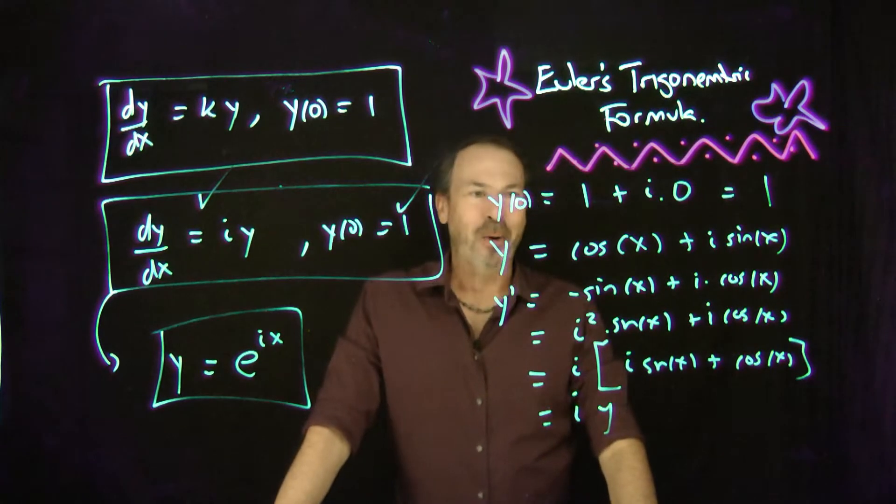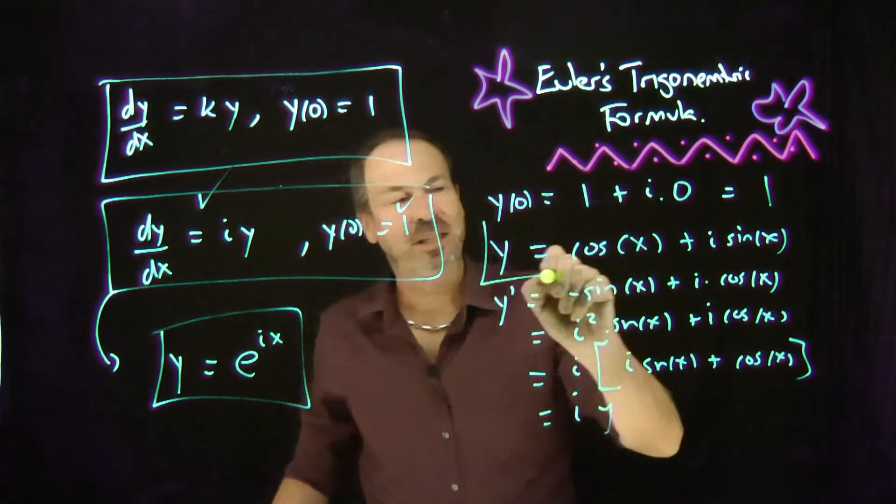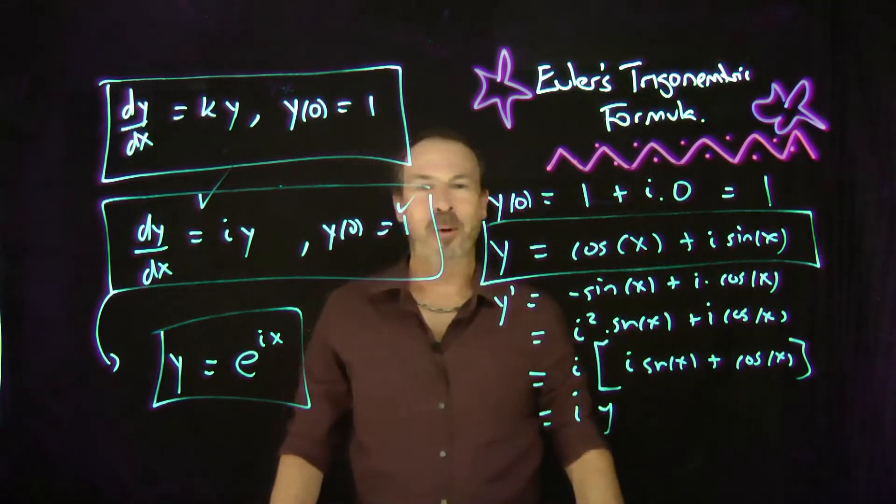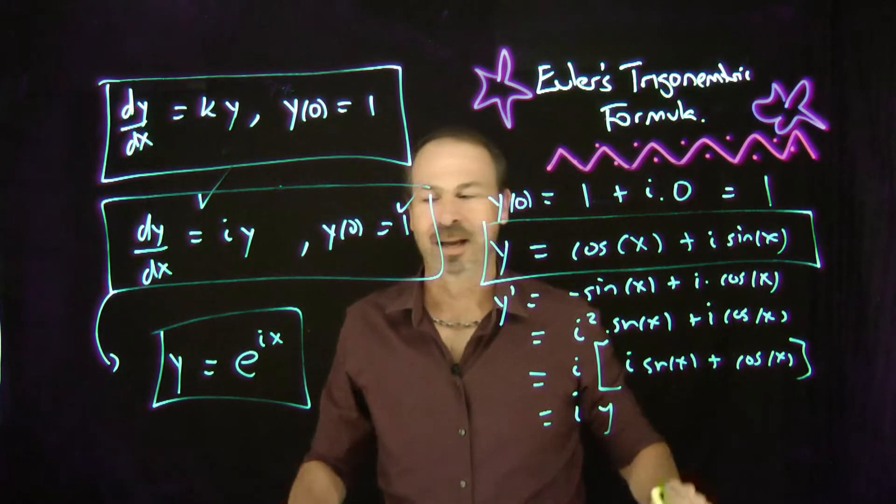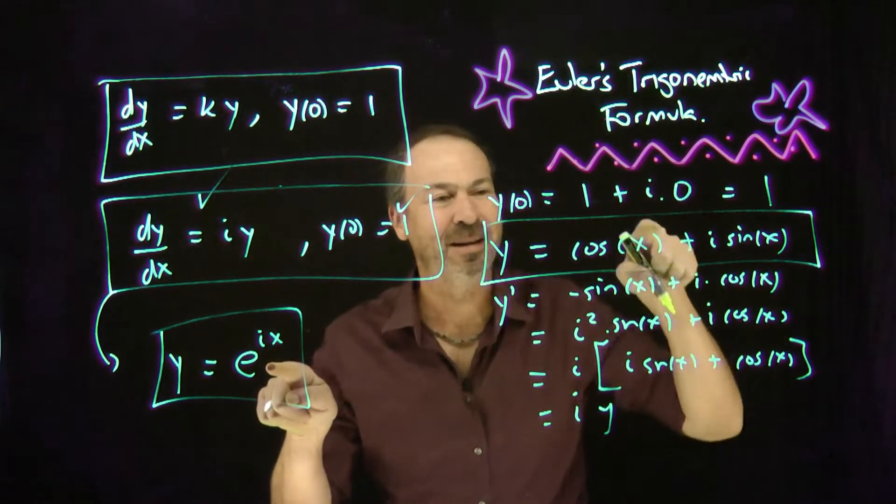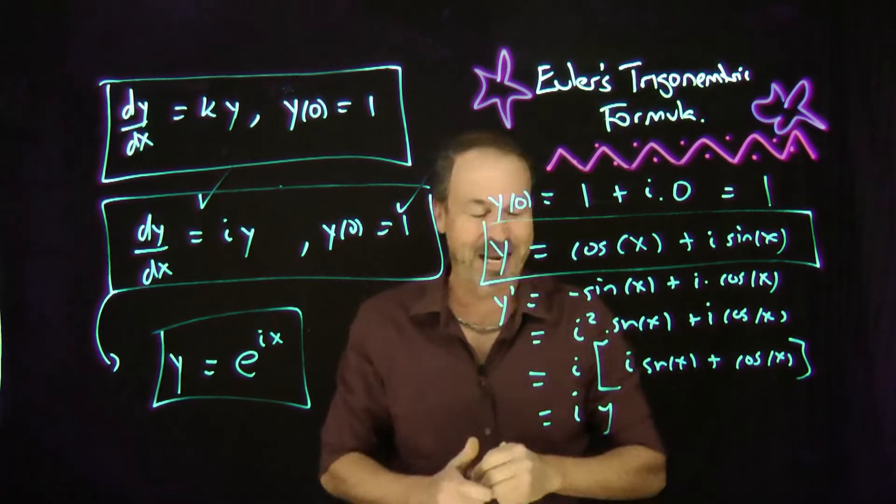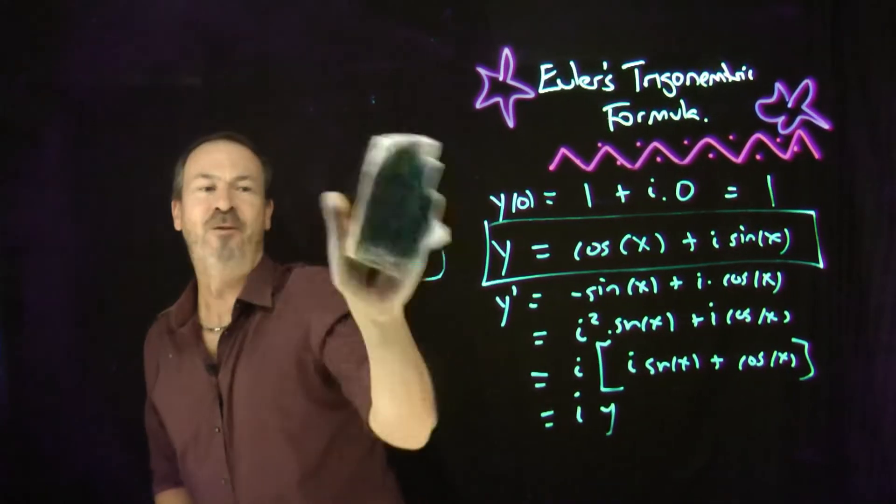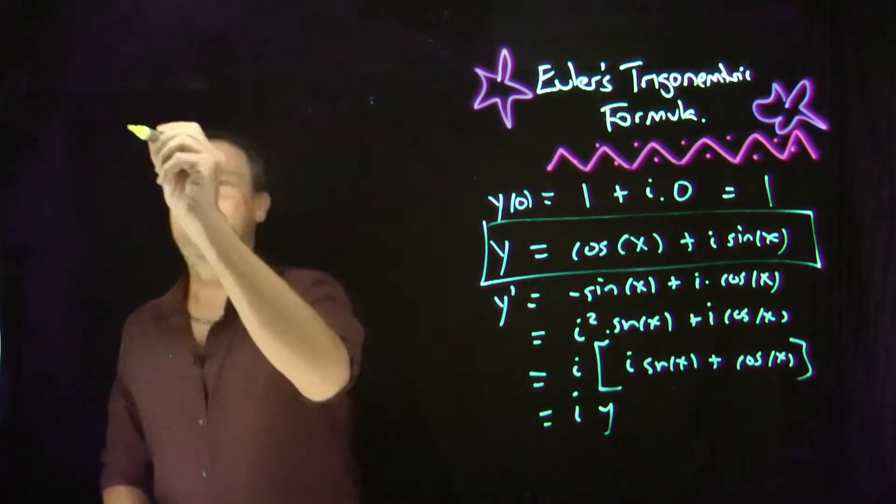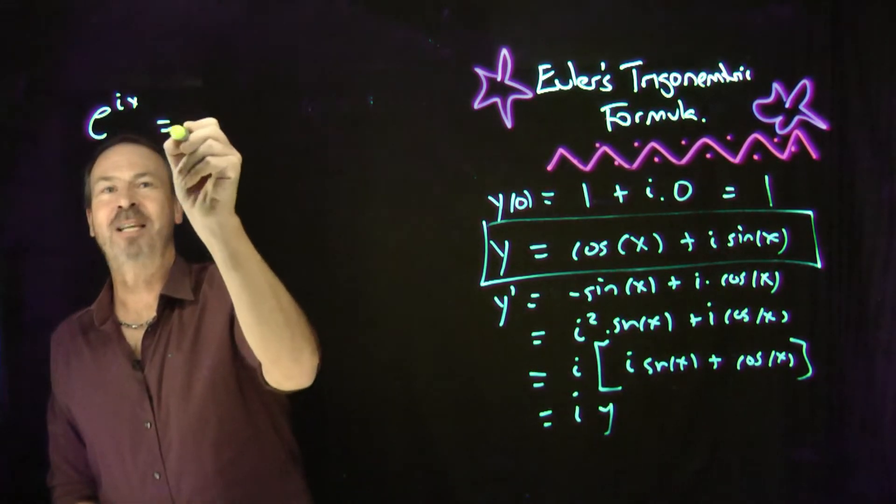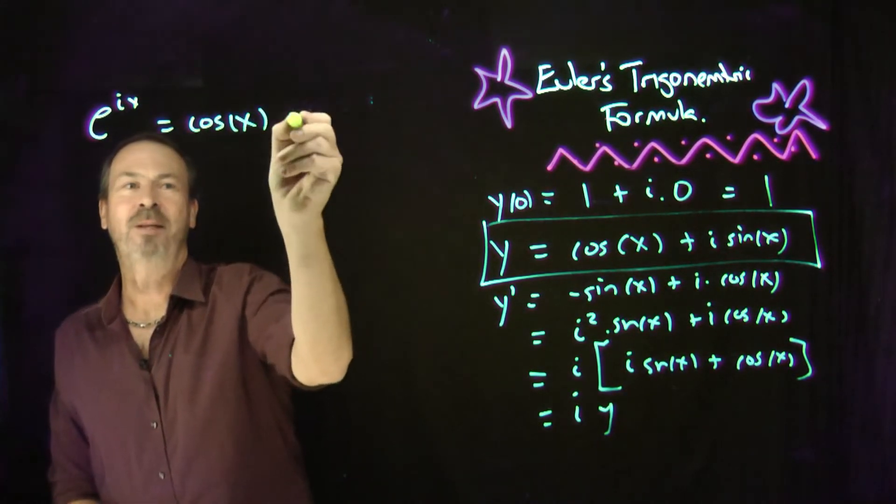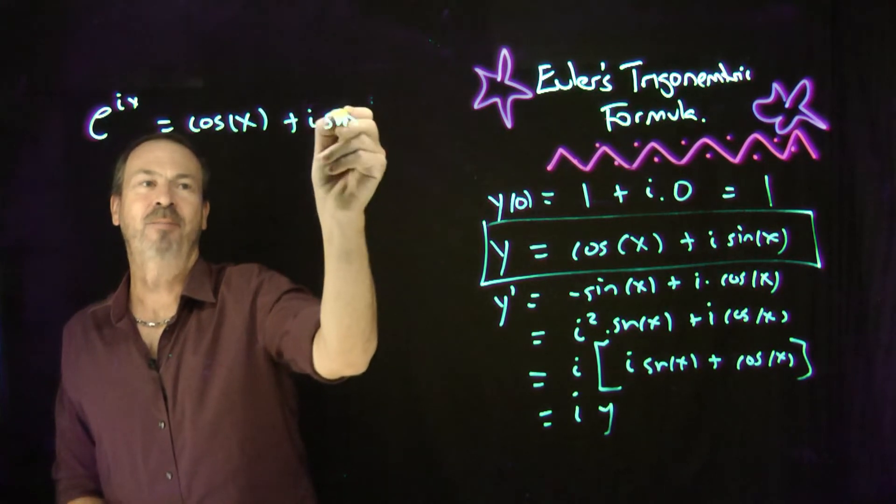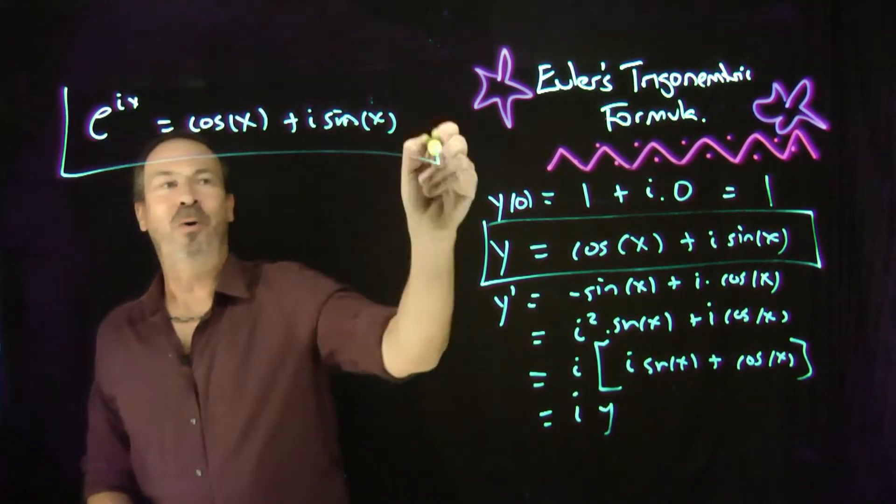So he said, oh, oh. So if our theory of differential equations still holds, even in the complex number realm, then solutions must be unique. That must be the same as that. They must be the same thing. And voila, we've just discovered Euler's formula for trigonometry. e to the ix must be cosine of x plus i sine of x. Whoa.